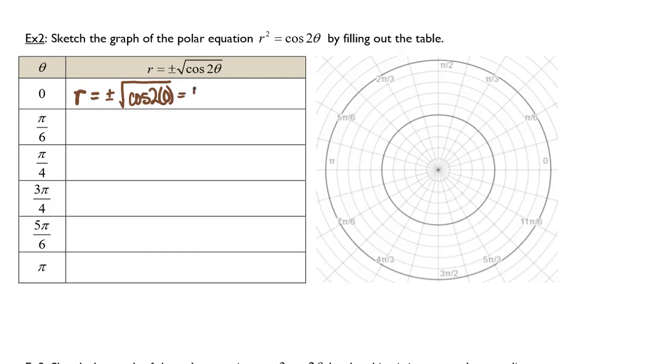The next substitution will be pi over 6, and r will equal plus or minus the square root of cosine of 2 times pi over 6.